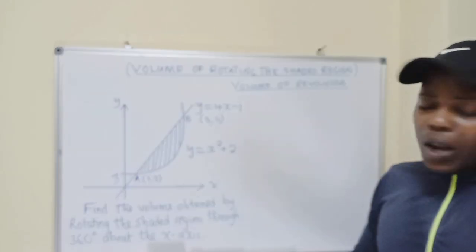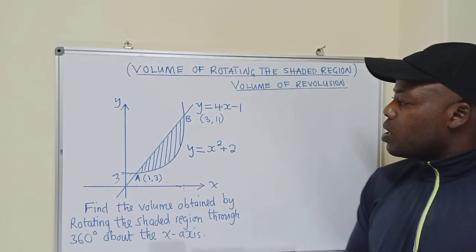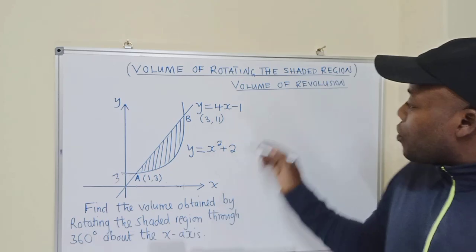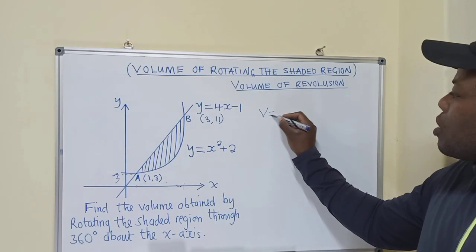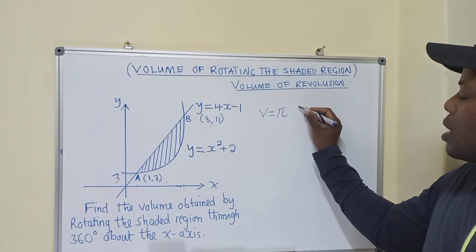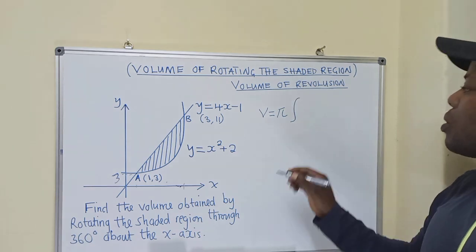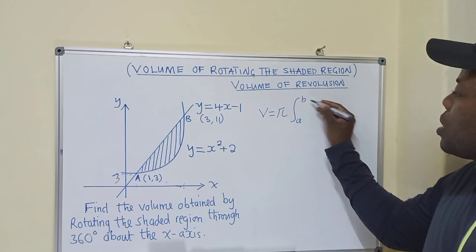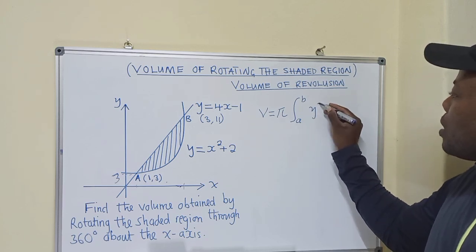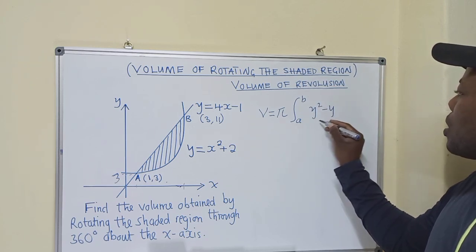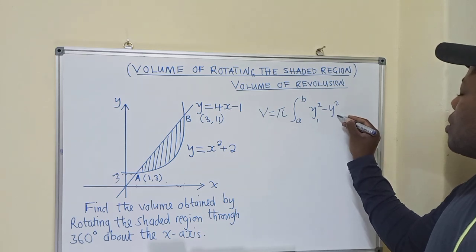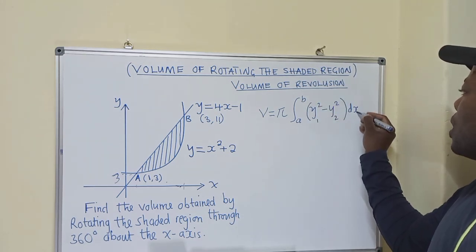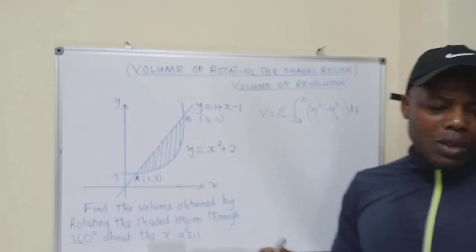So for us to find the volume, we need to use a formula. The formula looks like this: Volume is equal to pi, and we've got the integral from A to B of y1 squared minus y2 squared with respect to x. This is the way the formula looks.